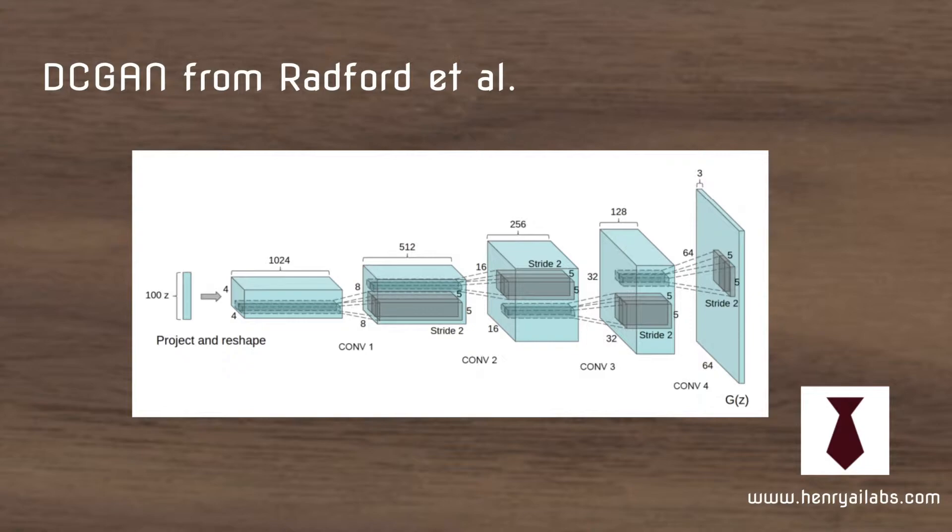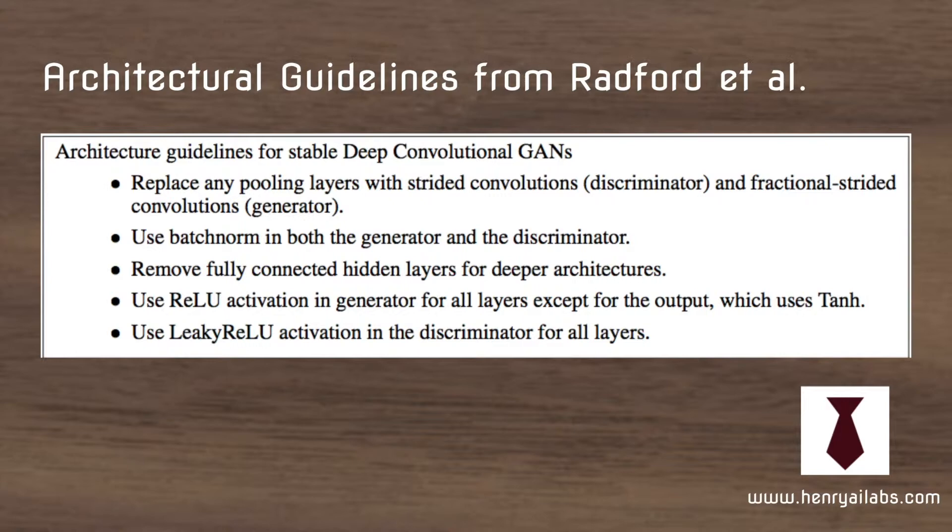In addition to this high-level diagram, in the Radford DCGAN paper, they give you guidelines for building your own DCGANs. Some of these say don't use any pooling layers, all-convolutional net type of mindset, and use batch normalization, which has been shown to work in all sorts of different deep learning applications. And then don't use fully connected layers in the discriminator or the generator.